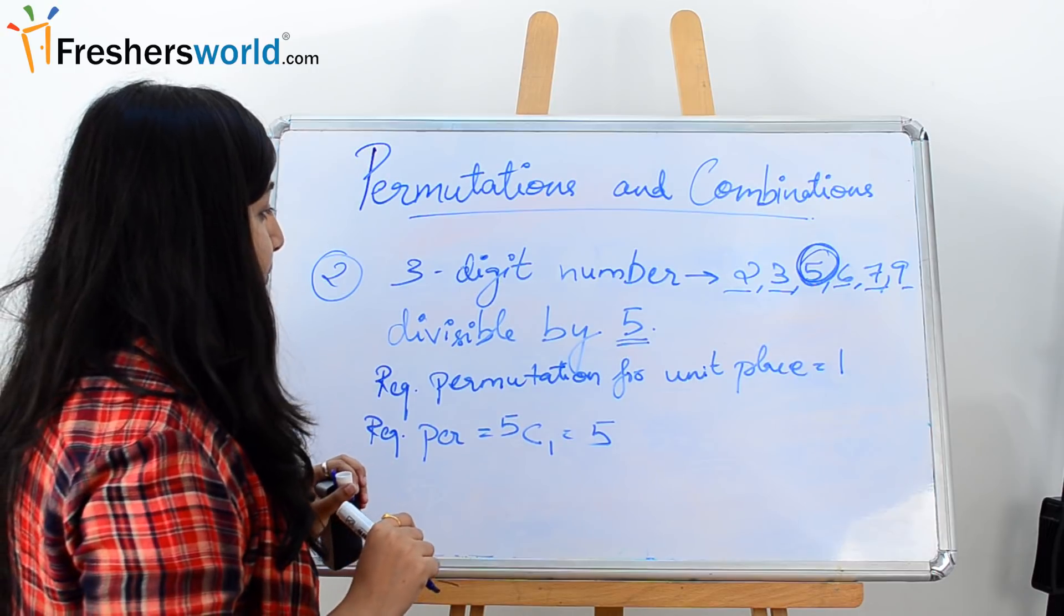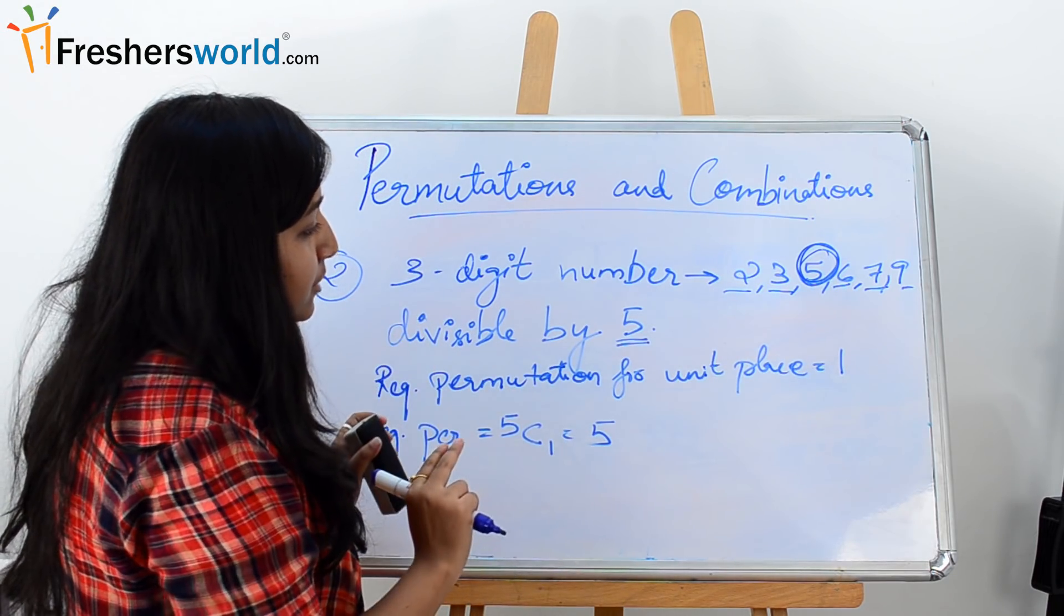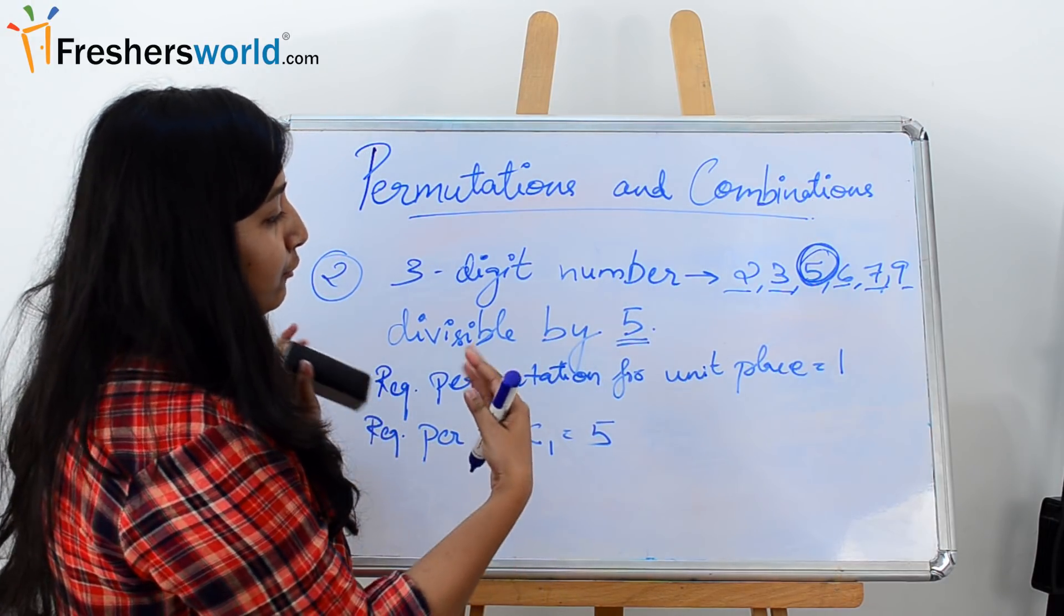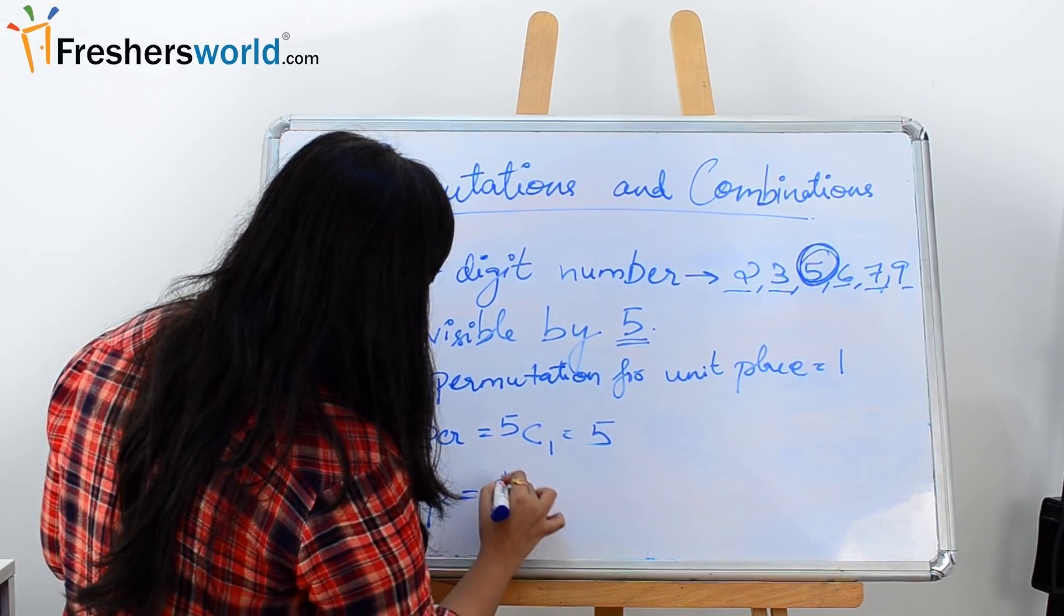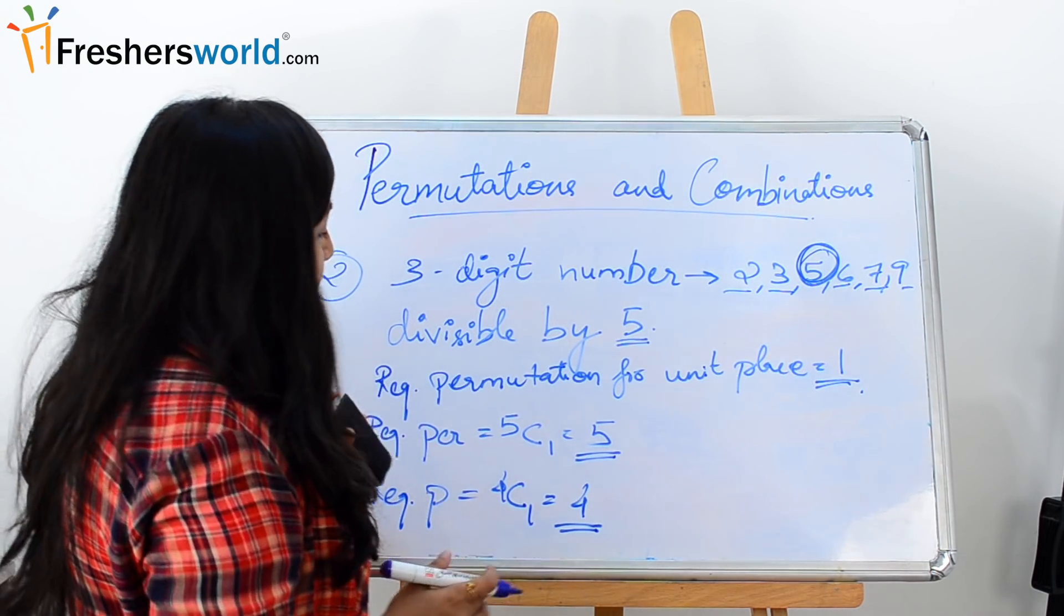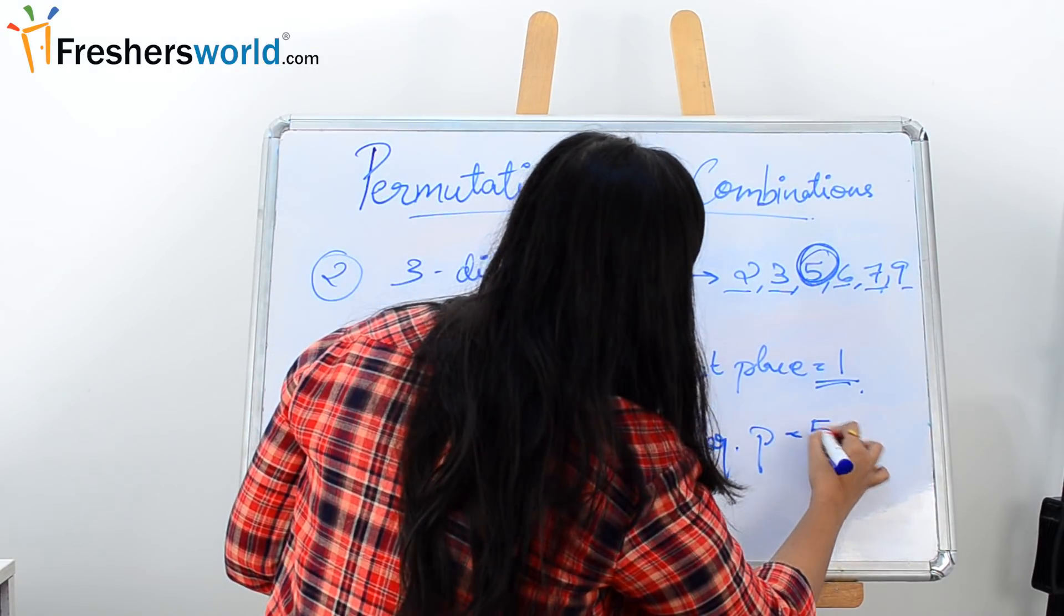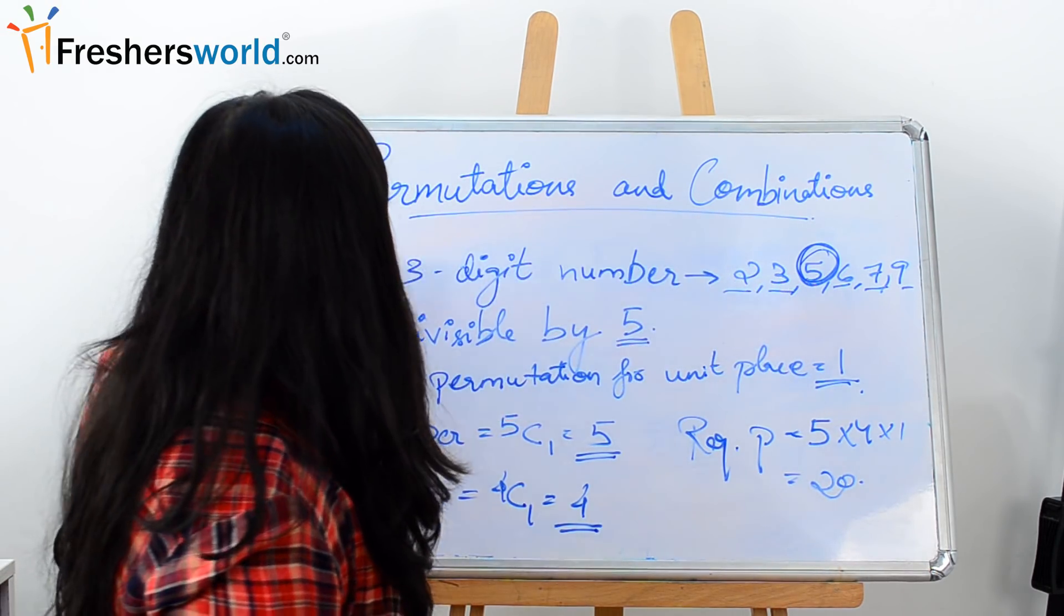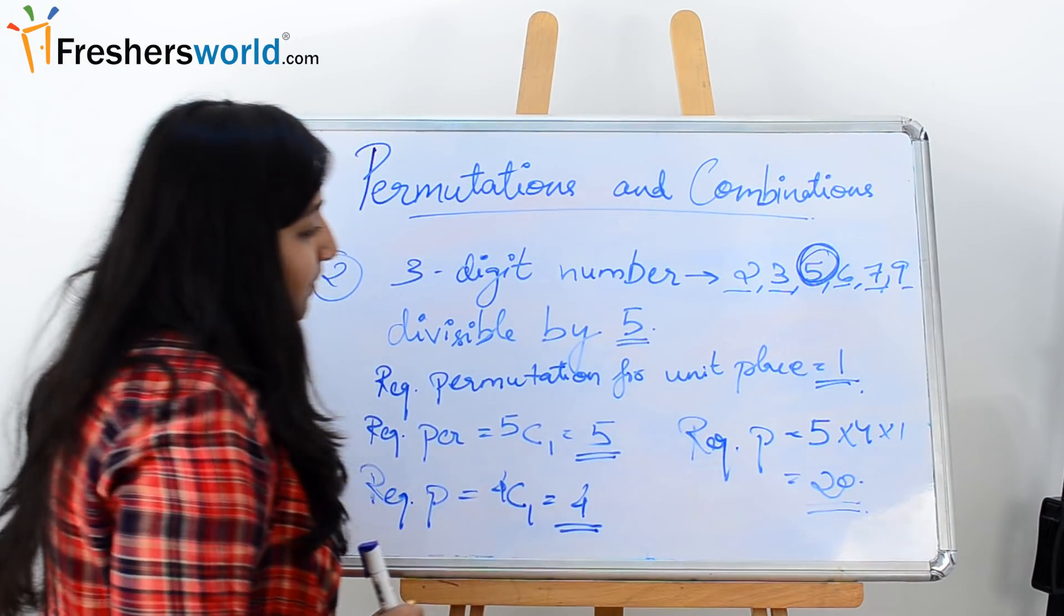Now we have the 100th position. For the 10th position we used all the rest of the 5 digits. So for the 100th position, one more digit will be removed out of it. We will have, out of the 6 digits, 4 digits would be available for the 100th position. So how can we place it? I mean, how the number of required permutations would be here? 4C1, which is 4. This is 5, and for unit place it is 1. So the total number of permutations in this case, the required permutation, would be 5 into 4 into 1. That means if we get these 6 digits and we have to create a 3-digit number which is also divisible by 5, we will be getting 20 different numbers. That's what this is.